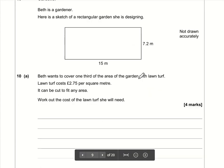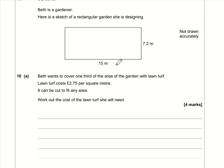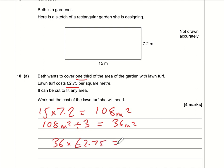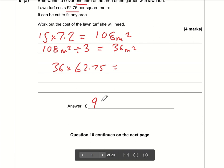Question ten: work out the area of the garden — 15 times 7.2 is 108 square metres. Beth only wants to cover one third of it, so 108 divided by 3 is 36 square metres. At £2.75 per square metre, 36 times £2.75 is exactly £99.